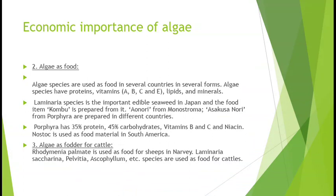Porphyra ki Japan mein kheti ki jaati hai. Ismein protein 30-35% hota hai, carbohydrate 45% hota hai, aur vitamin A, B, C aur niacin prashur maatra mein paya jaata hai. Europiy deshon mein Porphyra ka upyog ek pitthi ke roop mein kiya jaata hai jise hum 'Nori' kehte hain. Keval Japan mein hi is shewal ki pratiwars 30,000 metric ton se bhi adhik maatra khane mein kaam aati hai.